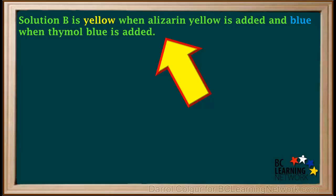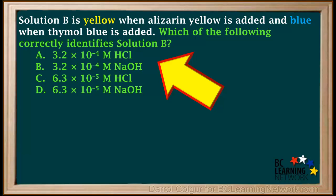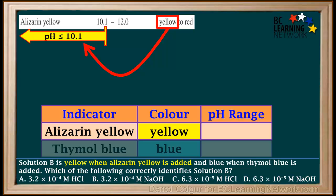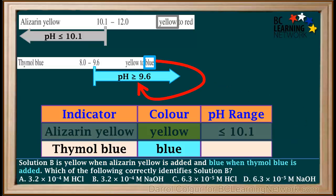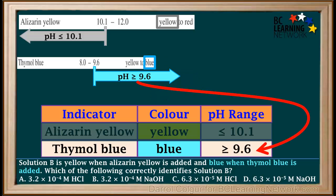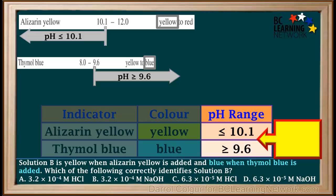Here's another question. We're given that solution B is yellow when the indicator alizarin yellow is added, and blue when the indicator thymol blue is added. We're asked which one of these solutions is the correct identity for solution B. The indicator table tells us that when alizarin yellow is yellow, the pH is less than or equal to 10.1. When thymol blue is blue, the pH is greater than or equal to 9.6. Because the pH is greater than or equal to 9.6 and less than or equal to 10.1, the pH is somewhere between 9.6 and 10.1 inclusive.